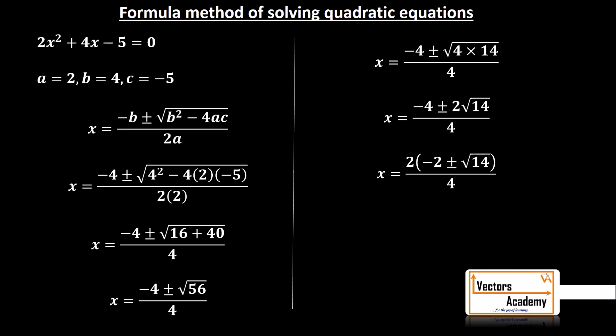I'll be left with minus 2 plus minus root 14. Now, cancelling out 2 and 4, I'll get x is equal to minus 2 plus minus root 14 by 2.